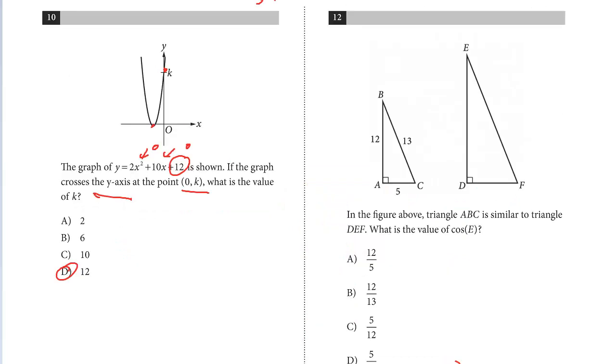Let's do question 12. In the figure above, triangle ABC is similar to triangle DEF. What is the value of cos(E)? Similar triangles means all the interior angles are the same. It doesn't mean the sides are the same, but the same ratio. Remember, similar problems are ratio questions.